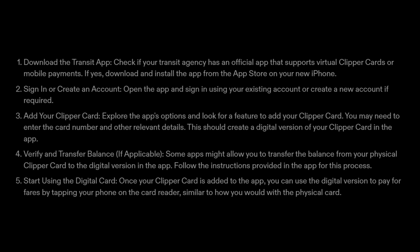Step 4: Verify and Transfer Balance, if applicable. Some apps might allow you to transfer the balance from your physical clipper card to the digital version in the app. Follow the instructions provided in the app for this process. Step 5: Start using the digital card. Once your clipper card is added to the app, you can use the digital version to pay for fares by tapping your phone on the card reader, similar to how you would with the physical card.